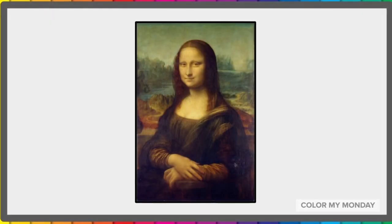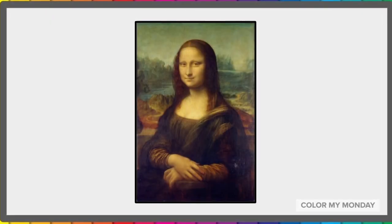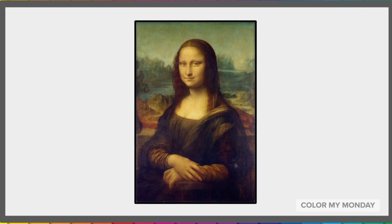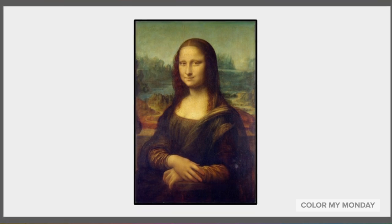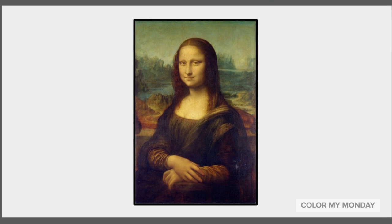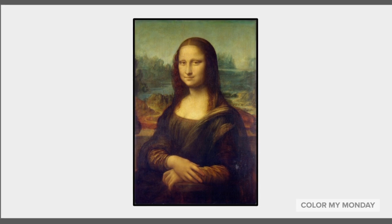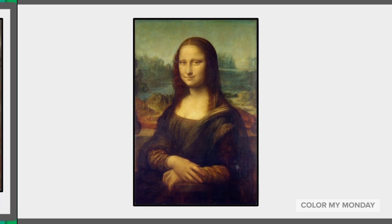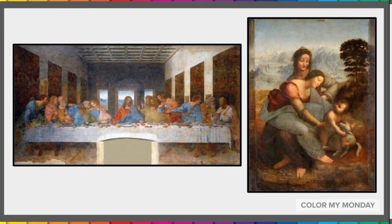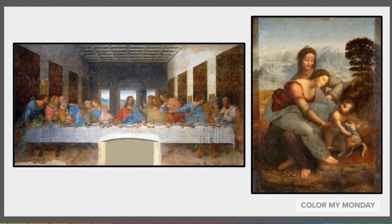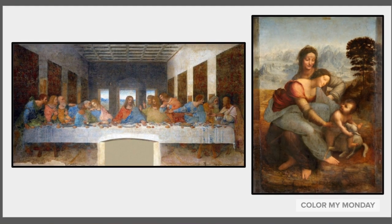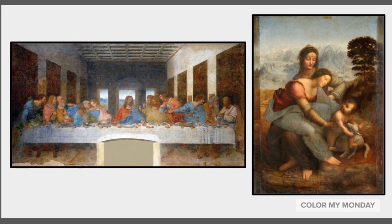Da Vinci painted the Mona Lisa, which is arguably the most famous painting in the world. While painting the Mona Lisa, da Vinci reportedly ordered music to be played at every sitting so she would continue to smile. He also painted The Last Supper and a number of religious paintings.